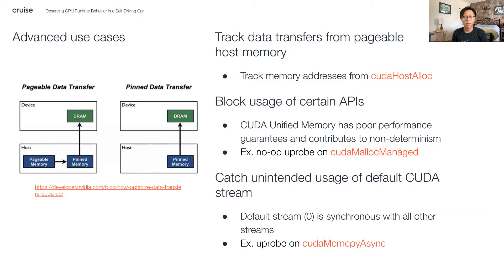In CUDA programming, another bad practice is to queue work onto the default CUDA stream, which is inherently synchronous with all other CUDA streams. Once again, we're able to leverage BPF U-probes to catch behaviors that are not suitable for real-time execution in our AVs. We can see in these examples that, with BPF, we're able to build systems that give us stronger guarantees about the runtime behavior of our GPU workloads in the car. This has immensely positive implications, not only on the performance attributes of our AV software stack, but on the safety of our vehicles as well.